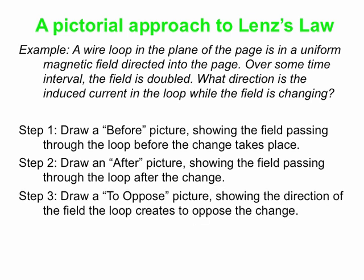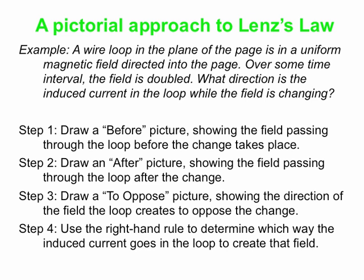So you draw a 'to oppose' picture — you show the direction of the field the loop creates. The fields in steps one and two are not coming from the loop itself; they're coming from something external, like a magnet brought close to the loop or a magnetic field set up some other way. Step three is the only field that is created by the loop itself. The loop creates this field by running a current around itself. Once you figure out the direction of the field the loop creates to oppose the change between step one and step two, you use your right-hand rule on the 'to oppose' picture to determine which way the current must go in the loop to create that field.